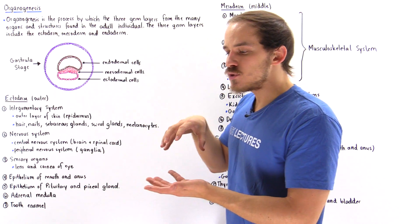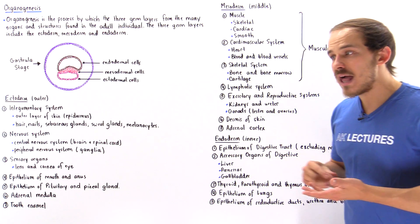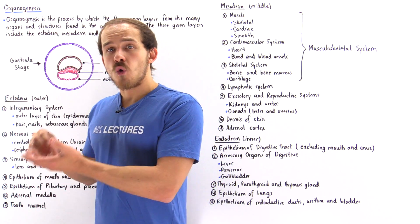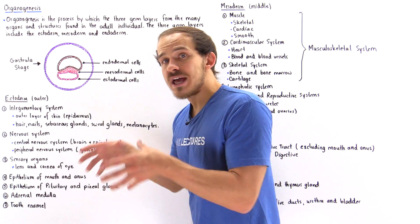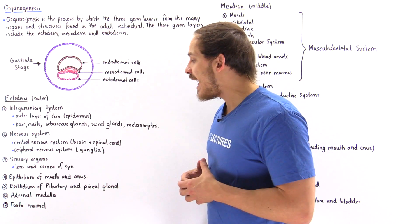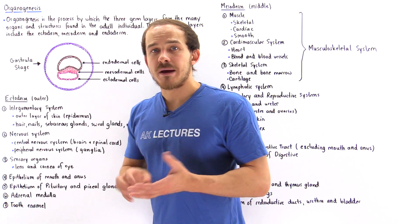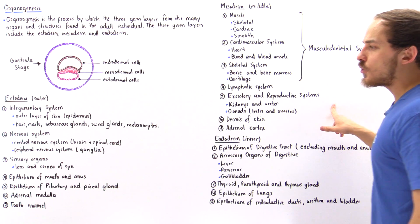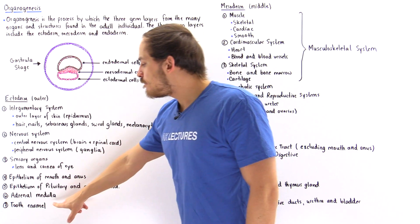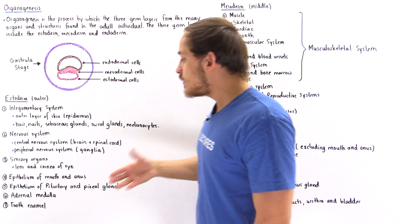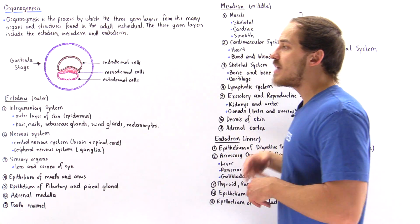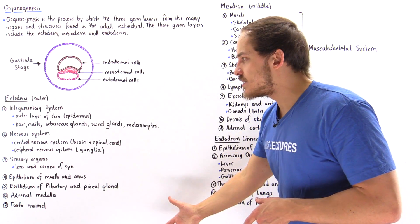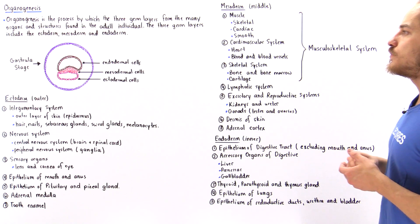On top of our kidneys we have the adrenal gland, which has the adrenal medulla and the adrenal cortex. The adrenal medulla — the inner portion — is actually formed from the ectoderm, while the adrenal cortex is formed from the mesoderm. Finally, the outer covering of our teeth, known as tooth enamel, is also formed from the ectoderm germ layer. All of these structures, organs, and systems are formed from the ectoderm germ layer — the light purple cells shown in the diagram.